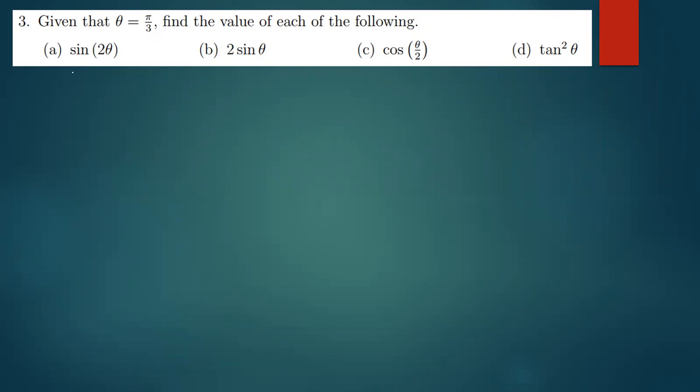So the first one is sine 2π, or sine 2θ rather. So sine 2θ, and we've been given theta to be π over 3. So this one is just going to be found by replacing theta with π over 3 there. So this is just the same as sine 2, and then you put π over 3 in brackets like that. Here you get something like sine 2π over 3. So this is what you're going to get.